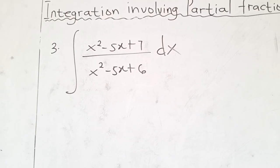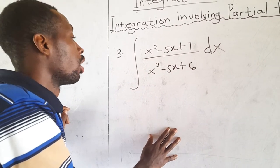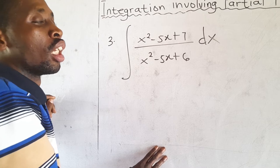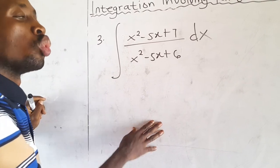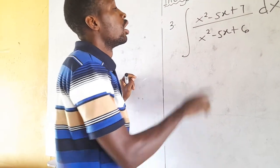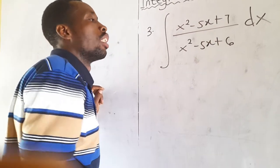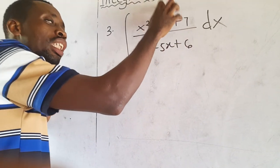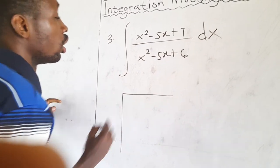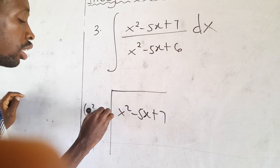For our third question: when the degree of the numerator equals or is greater than the degree of the denominator, the fraction is improper. You need to first divide to get a quotient plus a remainder over the divisor before you resolve the remainder into partial fractions and then integrate. So we'll divide: our dividend is x² − 5x + 7, and our divisor is x² − 5x + 6.